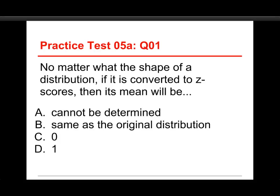The first question on this quiz is, no matter what the shape of a distribution, if it is converted to z-scores, then its mean will be: A, cannot be determined, B, same as the original distribution, C, 0, or D, 1.